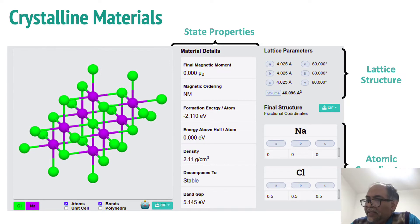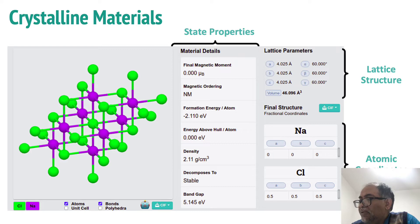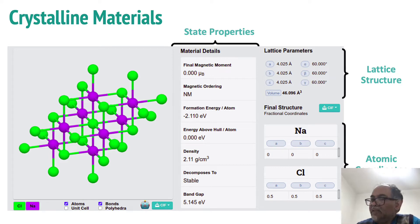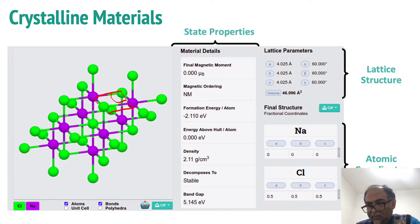Crystalline materials have a grid structure with material properties like magnetic moment, magnetic ordering, formation energy, and band gap. They have lattice parameters describing the degree between lattices, and atomic coordinates — for example, NaCl is a typical crystalline material.